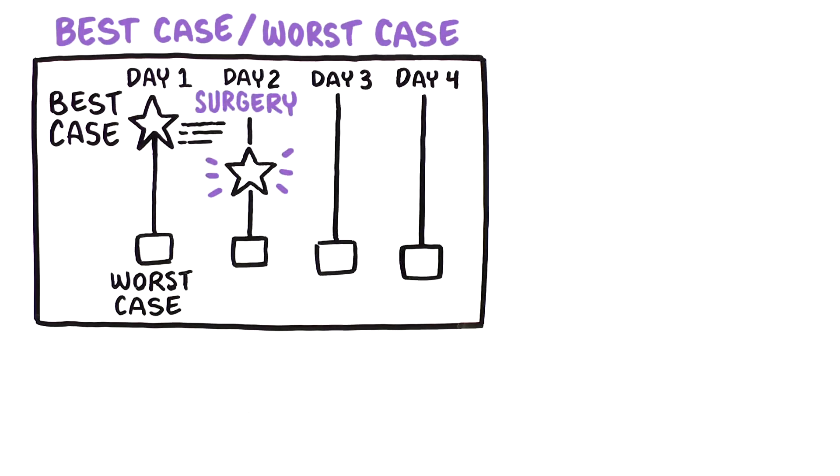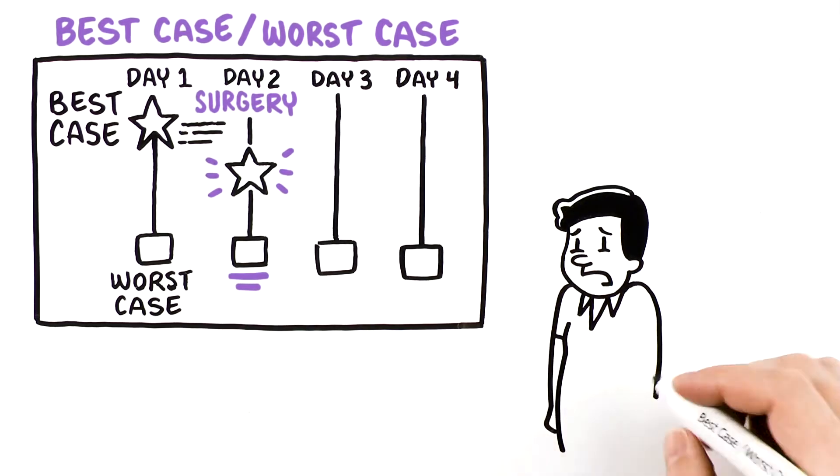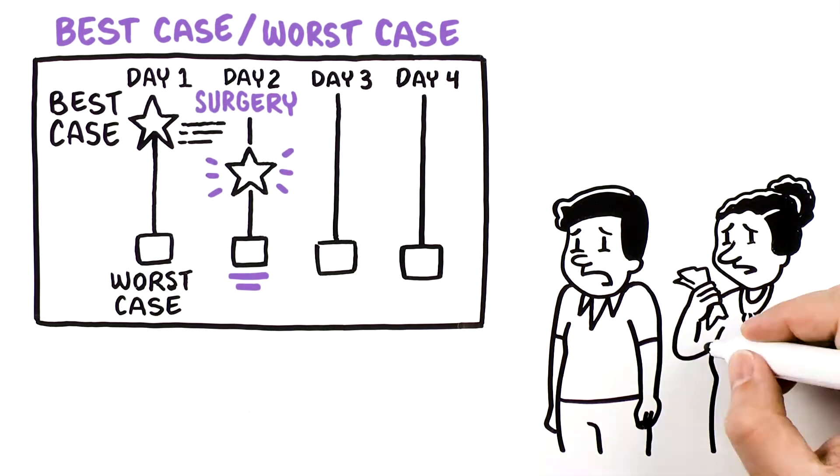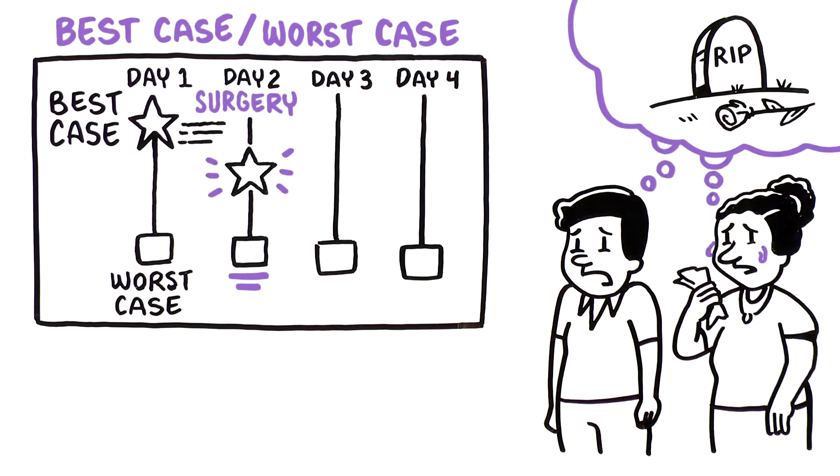Today, we will place the star lower on the line, showing that what we are hoping for now is different from before. Although we are hoping for the best case, what are we worried about? In the worst case scenario, Yara has irreversible brain damage. She can no longer do the things she enjoys. This could even lead to her death. By showing the range of plausible stories, it allows everyone to anticipate and prepare.